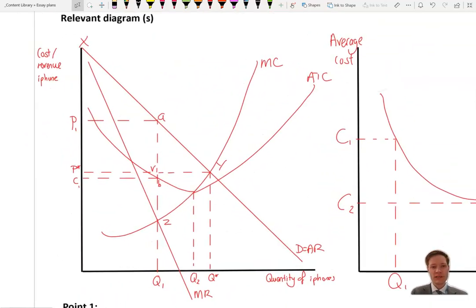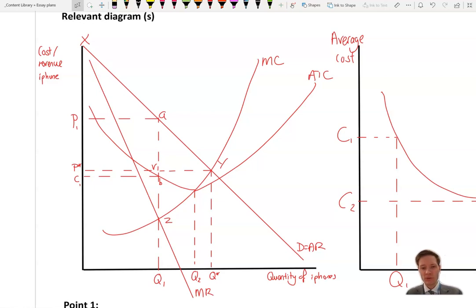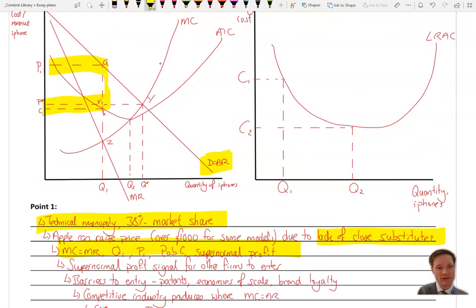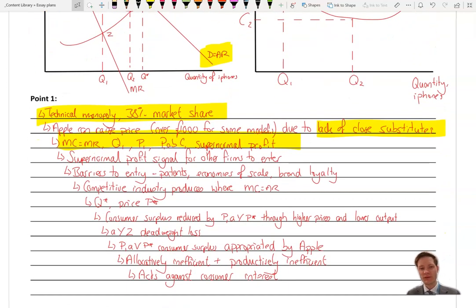Right, so first points would be needing to use this diagram here, which is your diagram showing that you have a degree of monopoly power using the downward sloping demand curve. Now, we'd want to say first of all that it is actually a technical monopoly, it has 38% of market share. And just from your own knowledge, we all know that Apple can raise prices. We can say that an iPhone is an expensive product, many of them are over £1,000 for just one model. That sort of shows you that clearly they're able to raise price and they have market power. Linking that to the lack of close substitutes would be very useful, and that then refers back to the price elasticity of demand. Your standard logical chain of reasoning, you'd want to define where MC equals MR, you'd want to show the level of supernormal profit, this area here, around there.